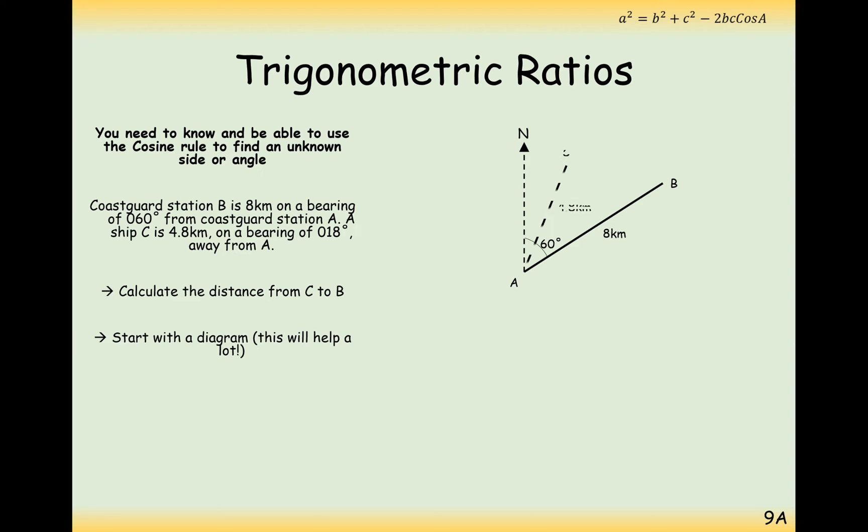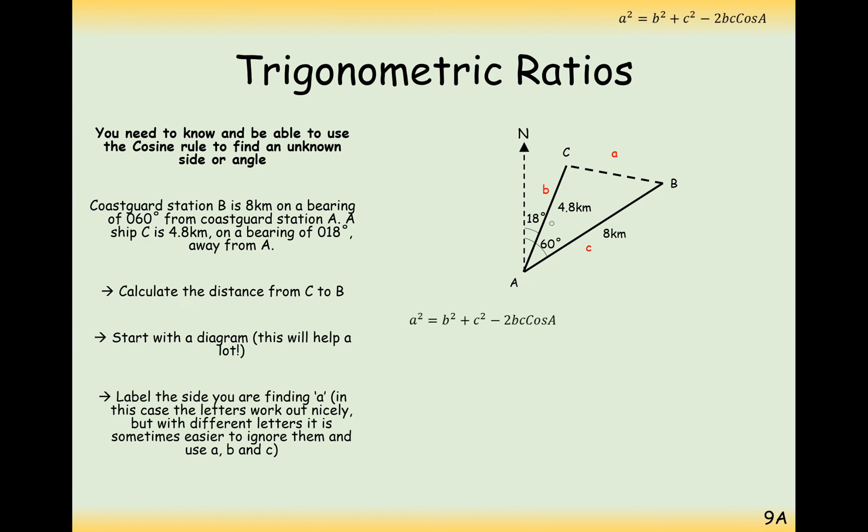Secondly, we're told that ship C is 4.8 kilometers away on a bearing of 18 degrees. And what we want to work out is the distance from B to C. So what we ideally have here is a side A that we don't know. We have two sides that we do know, B and C. And do we have the angle in between? Well, if we know the whole angle is 60 degrees and we've got an 18 degree angle here we must know the angle between the lines B and C here that gives 42.